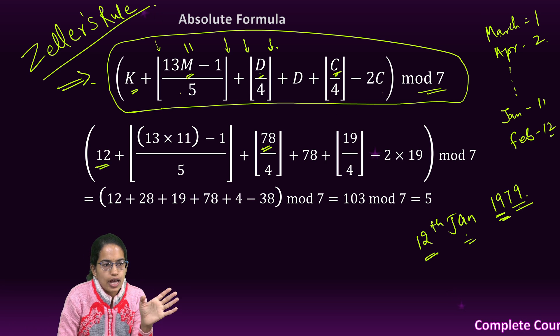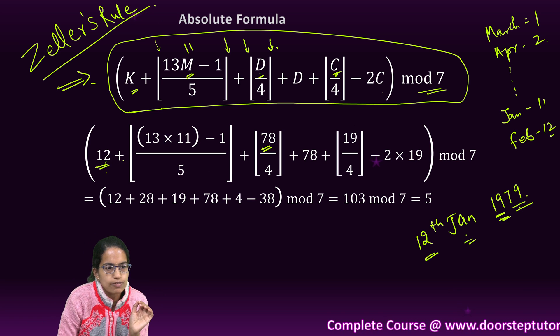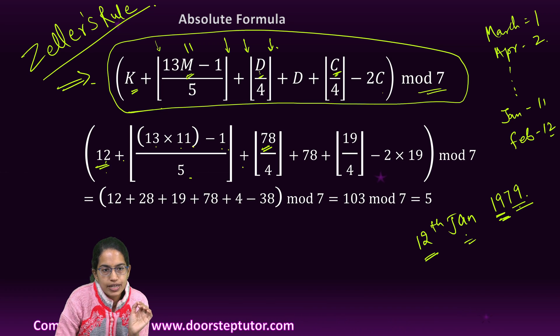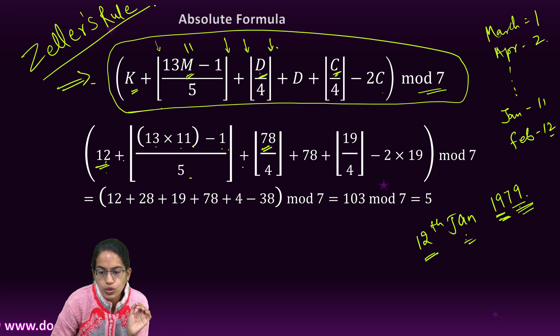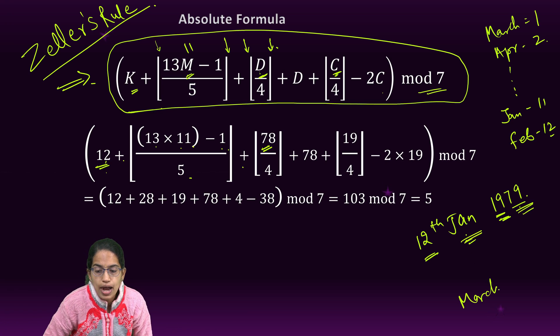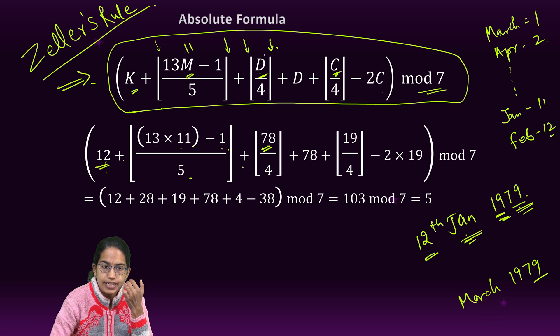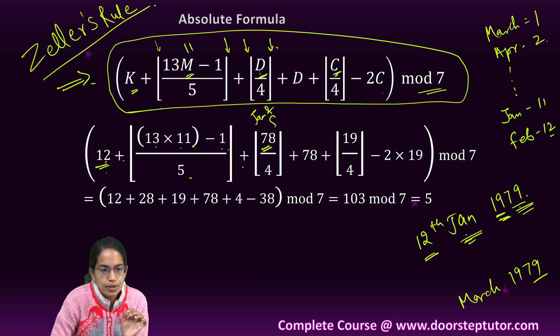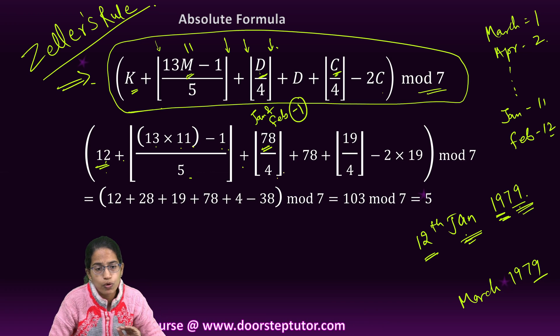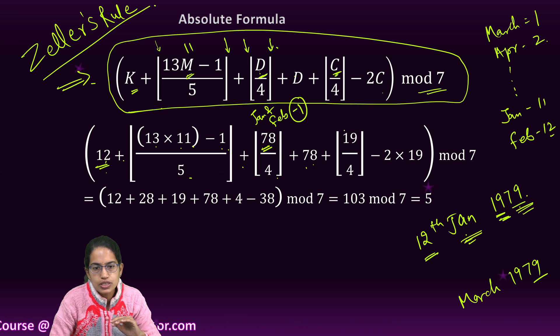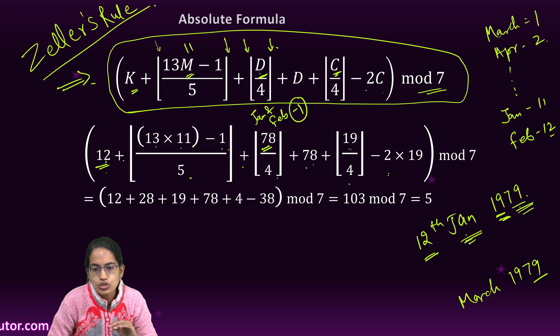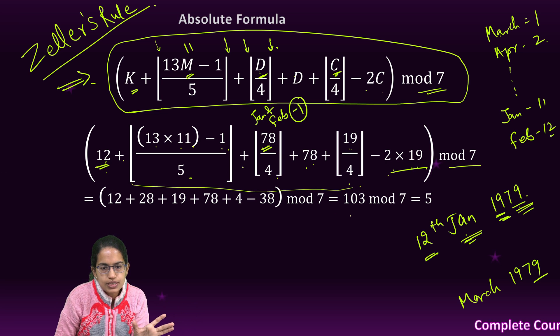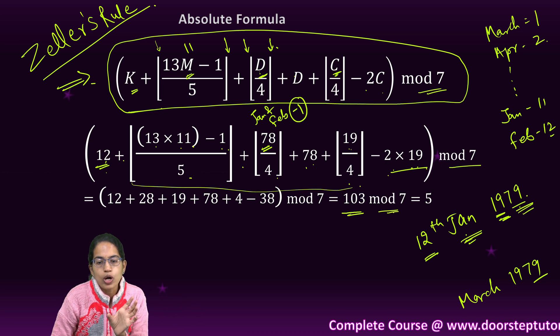Now I substitute all the values, so it would be 12 plus (13 × 11 - 1) divided by 5, plus 78—where I took 78 because it was January. If it was March 1979, I would have taken 79 here, not 78. So be very careful: only for January and February we do minus 1. So 78 by 4, plus 78, which is D. Now C is 19, 19 by 4, minus 2 × 19, and mod 7.